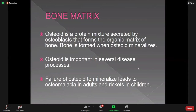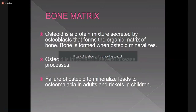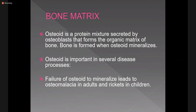Bone matrix is the osteoid. It is a protein mixture — 33% type 1 collagen and 67% calcium salt, that is calcium hydroxyapatite. It is important in several disease processes. The failure of osteoid to mineralize leads to osteomalacia in adults and rickets in children.